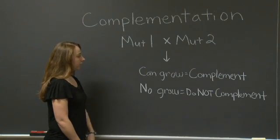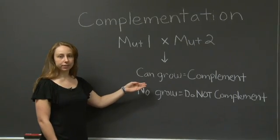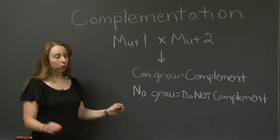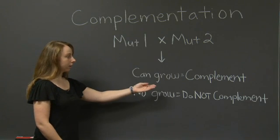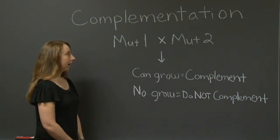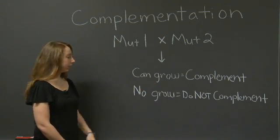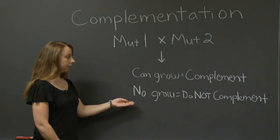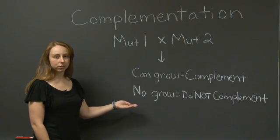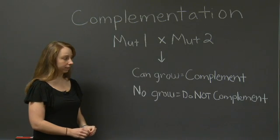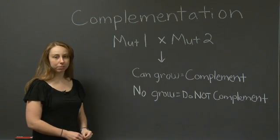If the progeny can grow, this means that the two mutations were in different genes, and thus they complement each other. However, if the progeny cannot grow, this means that the two mutations were in the same gene, and they do not complement each other.